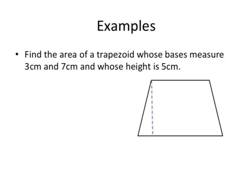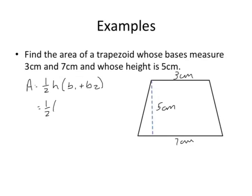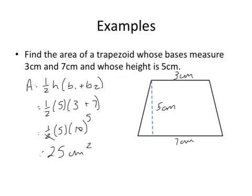So let's look at an example of this. We have an area of a trapezoid whose bases measure 3 centimeters and 7 centimeters, and whose height is 5 centimeters. So area is one-half times the height times base 1 plus base 2, which is one-half times 5 times 3 plus 7. Now remember, 3 and 7 have units of centimeters, as does 5, so that's one-half times 5 times 10. And so we will end up with 25 centimeters squared is our area.